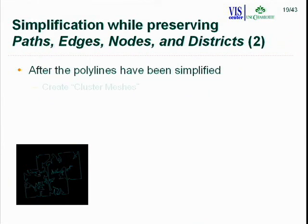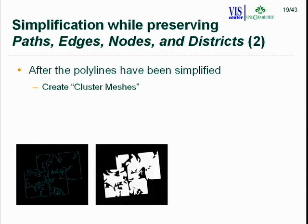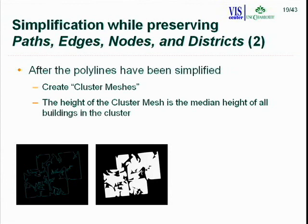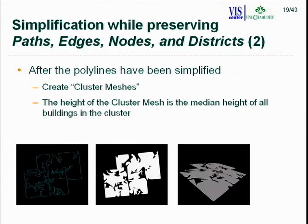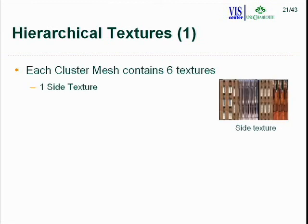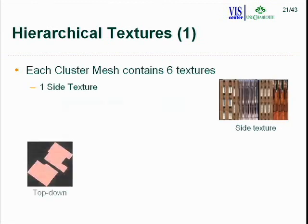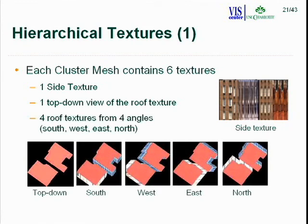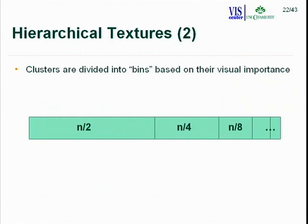Once polylines are simplified, we create cluster meshes by extruding footprints, with height set to the median height of all buildings in the cluster. We then apply texture hierarchically: each cluster mesh receives six textures — a side texture, a top-down roof texture, and four roof textures from different angles. Cluster meshes are placed into bins based on visual importance; less visually important clusters receive less texture resolution since all bins contain equal texture resolution, meaning more competitors means less per cluster.